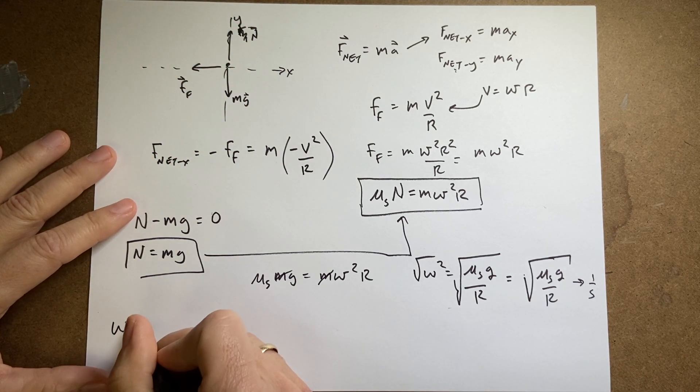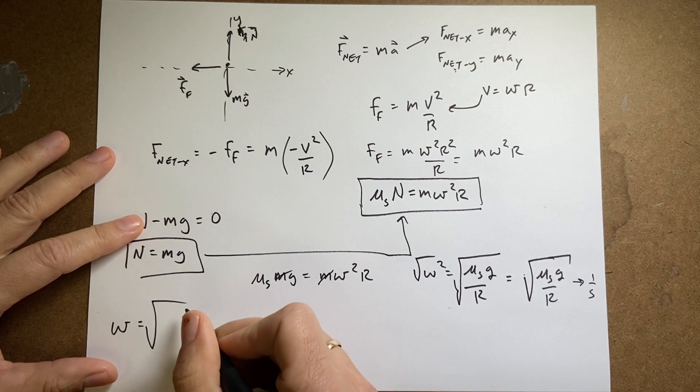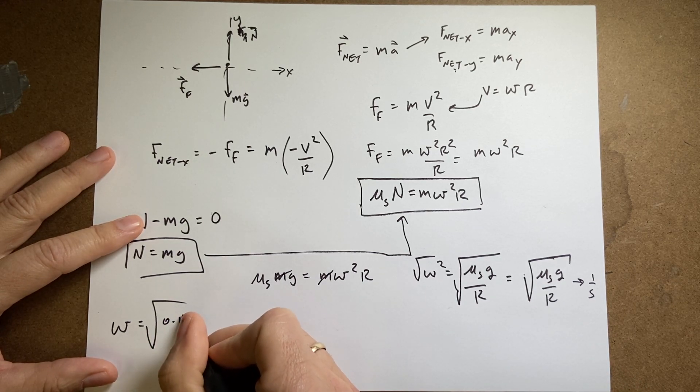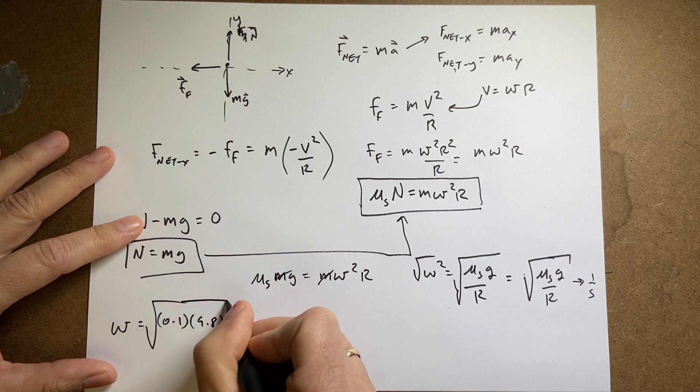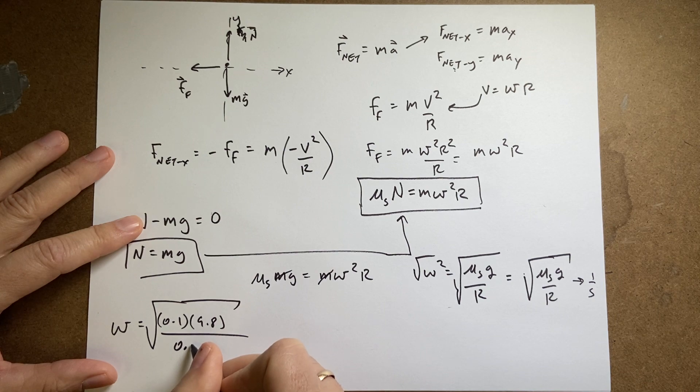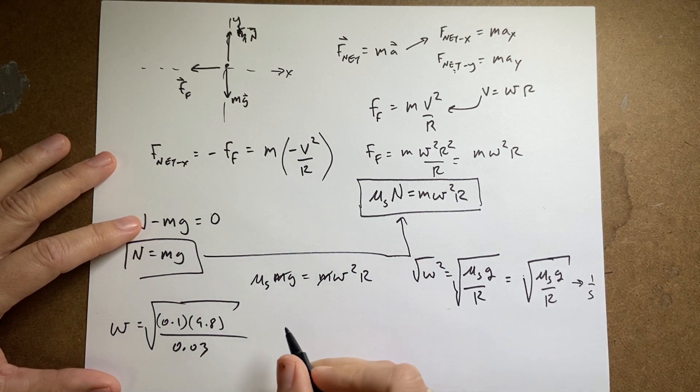Okay, let's put in our values. So omega is going to be equal to the square root of the coefficient of static friction 0.1. The g is 9.8. I'm going to leave my units off. The radius was 0.03. You'll notice that the mass of the penny doesn't even matter. Okay.